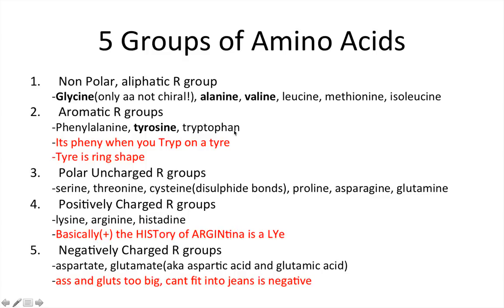The aromatic R groups are phenylalanine, tyrosine, and tryptophan. The way I remember this is I think of tyrosine as a tire, and a tire is circular or ring-shaped. All my UK friends are going to appreciate my spelling of tire here. The other way I remember is: it's funny — it's pheny when you trip on a tire. So I'm associating that with the ring aromatic groups, and that helps me remember which amino acids are aromatics.